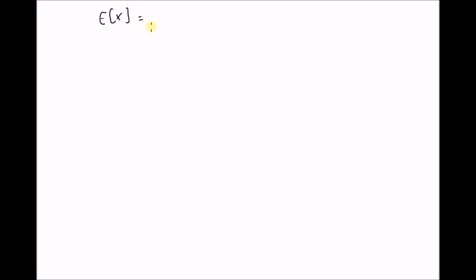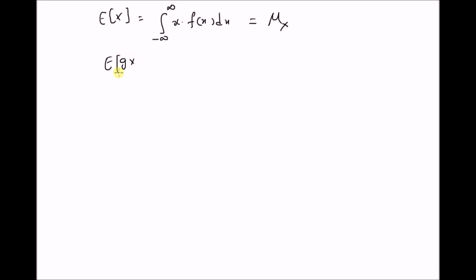Given the definitions, the expectation of a continuous random variable X is equal to the integral from minus infinity to plus infinity of x times f(x) dx, where f(x) is the probability density function of the random variable X, and this is denoted as μx. The expectation of a function of this random variable is equal to the integral from minus infinity to plus infinity of g(x) f(x) dx.